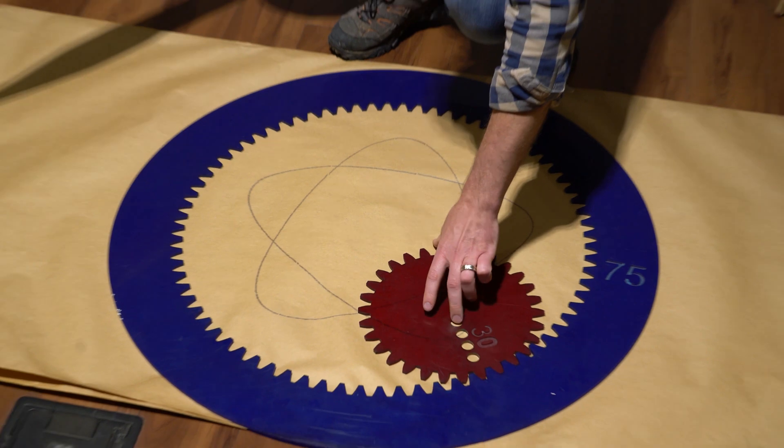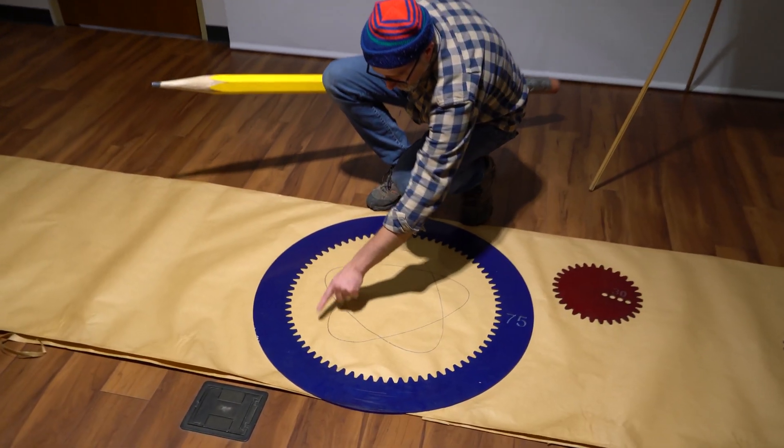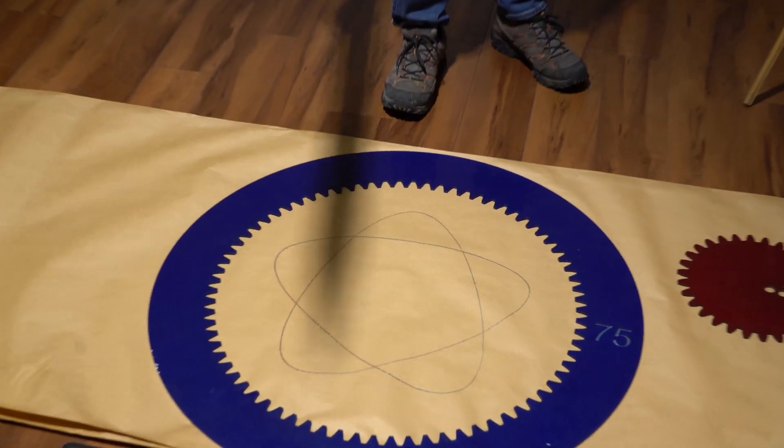All right, so let's see how many points we have on this hypotrochoid. One, two, three, four, five. The math was correct.